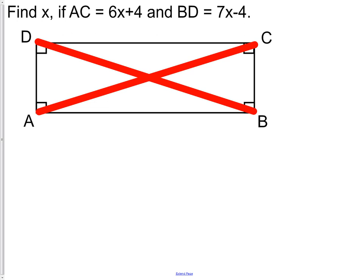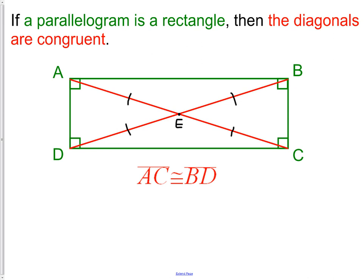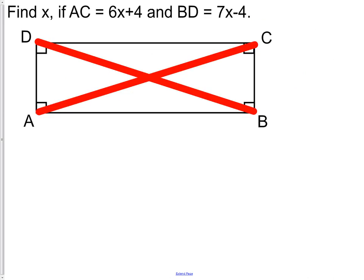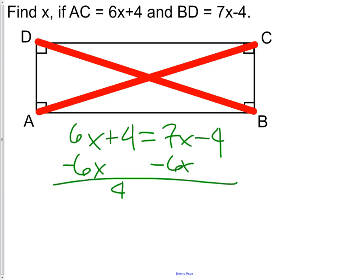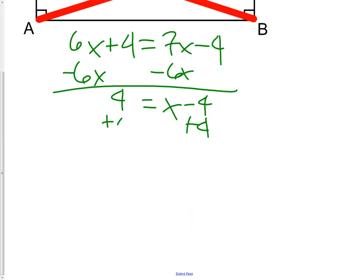Well, hopefully you noticed pretty quickly there that I drew in the two diagonals. And what we knew or learned from the previous slide is that the diagonals are congruent. So all we need to do is set the diagonals simply congruent to each other. Doing some fairly simple algebra, we see that X equals 8.